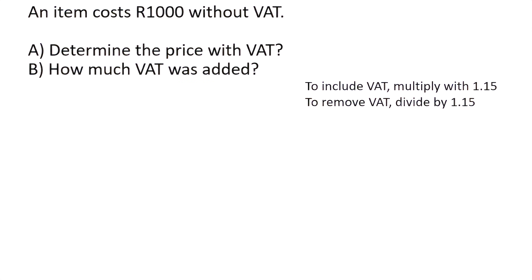An item costs 1000 Rand without VAT. Determine the price with VAT. So to include VAT, multiply. You just want to make the number bigger, so you multiply, and then when you want to make the number smaller, you divide. So we're going to say for question A, you're just going to say 1000, multiply by 1.15, and that's going to give you 1150 Rand.